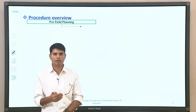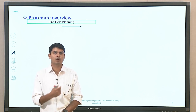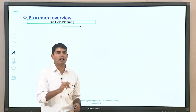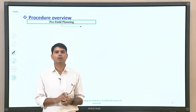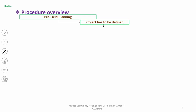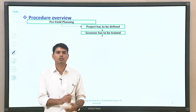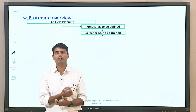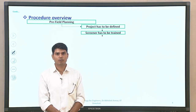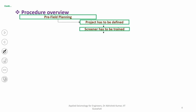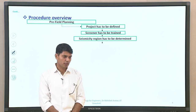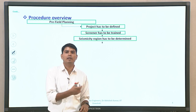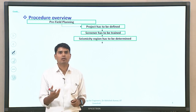First, you go for pre-field planning — whatever information you need to look into when going to the site or a particular location to assess specific building details. In pre-field planning, you define what type of project you are dealing with, then the screener has to be trained. You must also mark latitude, longitude, the address of the buildings, and note the seismic zone in which the buildings are located, since you are assessing from a seismic vulnerability point of view.